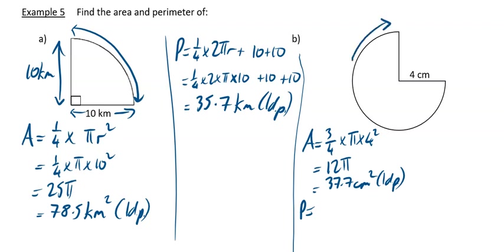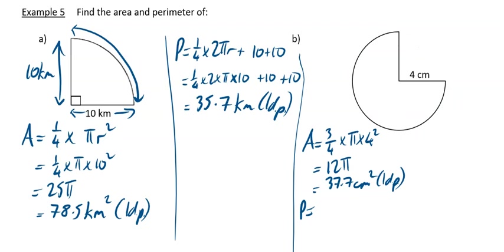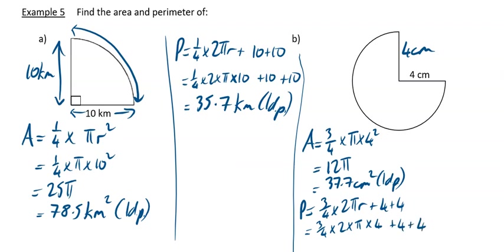For the perimeter, it is three quarters of a circumference, so three quarters times 2πR, and then you've got plus 4 and plus another 4. Label this length as 4 on your diagram as well. So it's three quarters times 2 times pi times 4, plus 4 plus another 4. Press equals - doing that in one go on the calculator gives 26.8 centimeters to 1 dp.